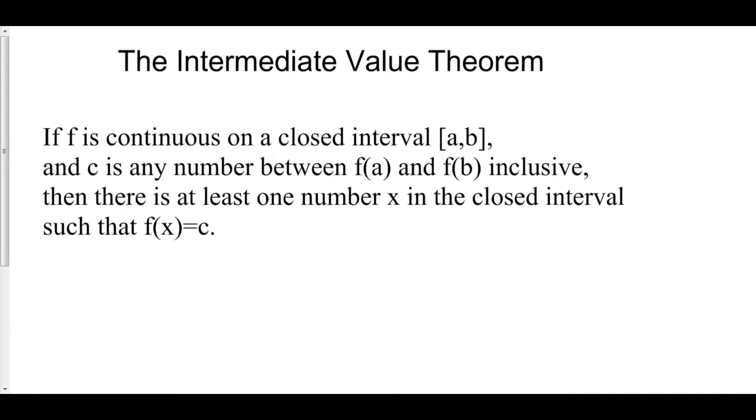The Intermediate Value Theorem says that if f is continuous on a closed interval from a to b, and c is any number between the function value at a and the function value at b inclusive, then there is at least one number x in the closed interval such that f of x is equal to c.